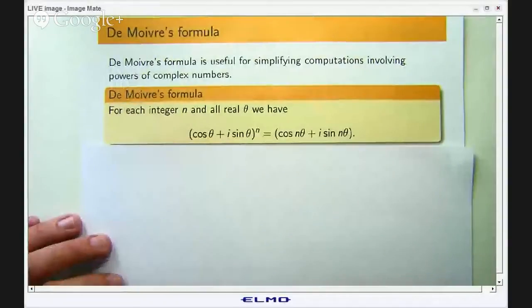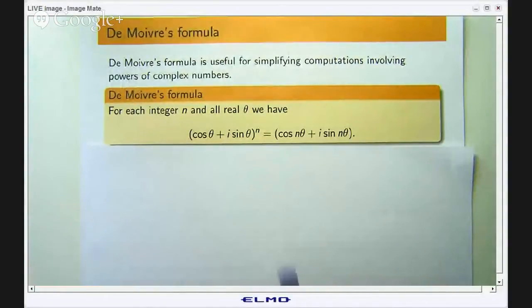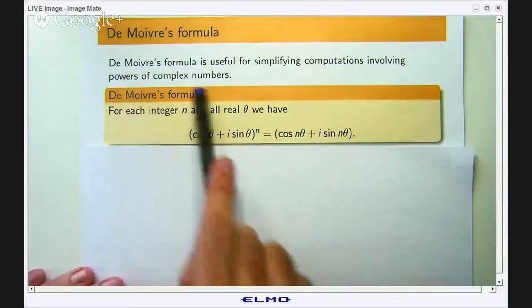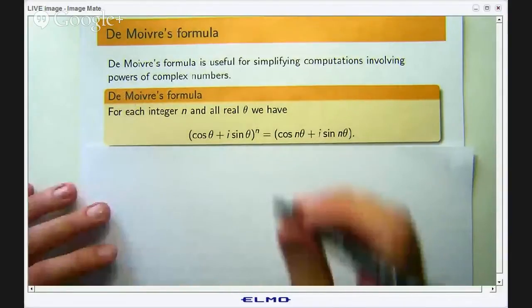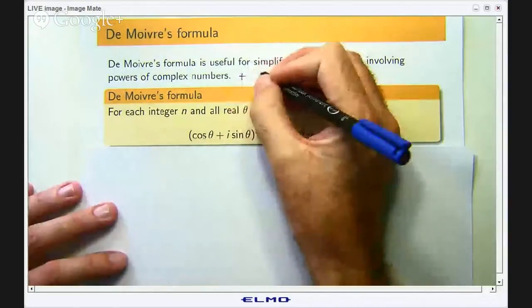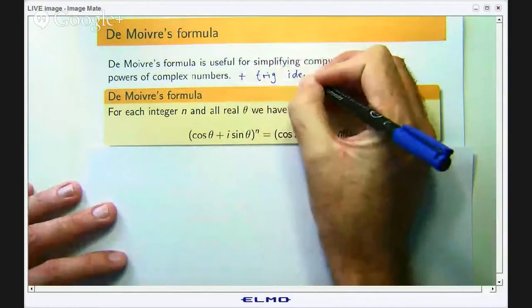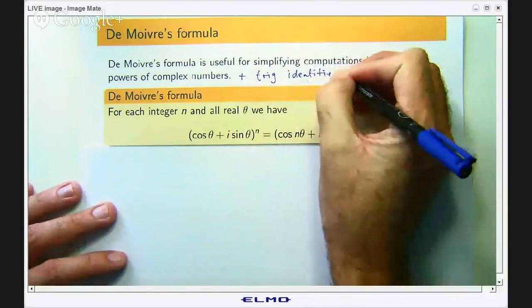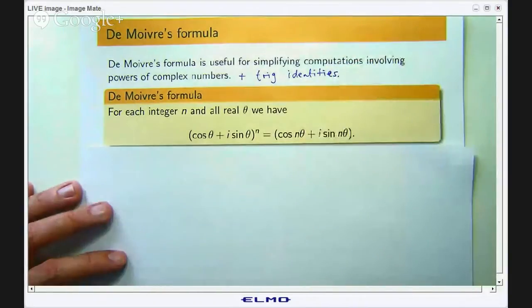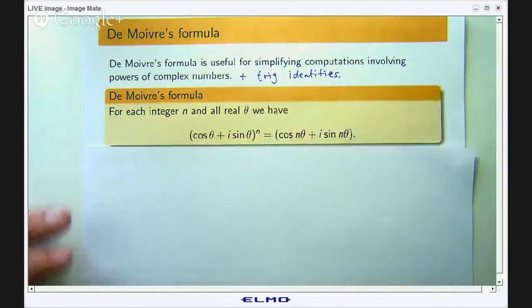So De Moivre's formula is down here. It is useful for simplifying computations involving powers of complex numbers and also can be used to produce trig identities. That is going to be one of our main focuses with the application of De Moivre's formula.